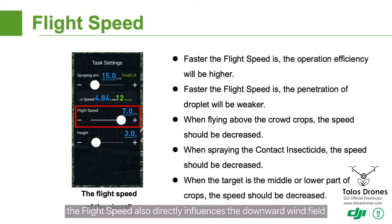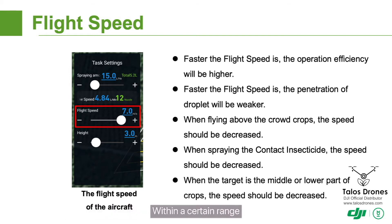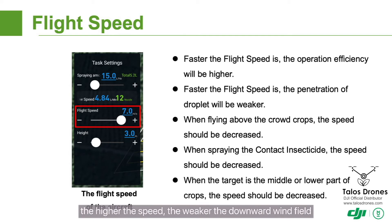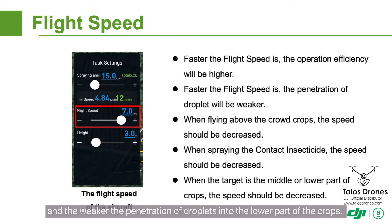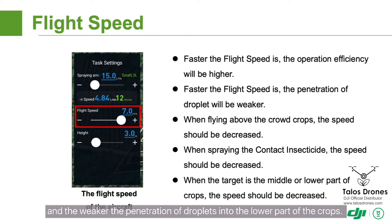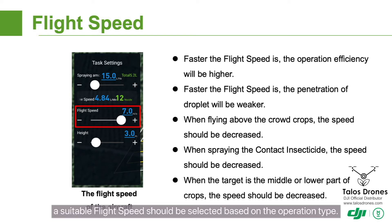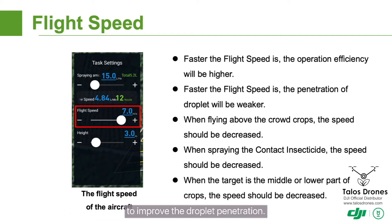The flight speed also directly influences the downward wind field of the agrodrone. Within a certain range, the higher the speed, the weaker the downward wind field, and the weaker the penetration of droplets into the lower part of the crops. Therefore, a suitable flight speed should be selected based on the operation type. Dense crops and contact pesticides require a lower flight speed to improve droplet penetration.